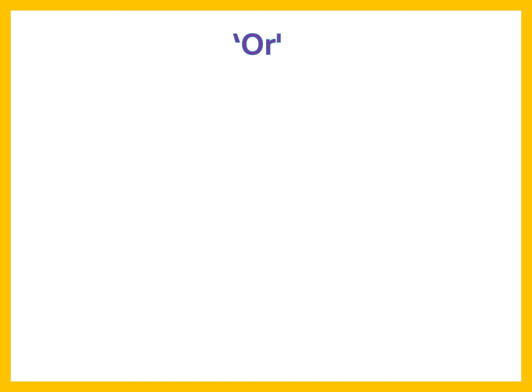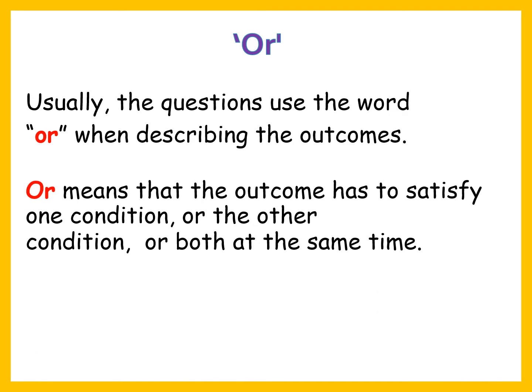Like in our sample question — head or 5. When we use OR in a question, it means the outcome has to satisfy one condition or the other, or both at the same time. OR means at least one condition is fulfilled. Head and 5 can also come together, and our condition is still satisfied. We denote OR with the union symbol (∪).